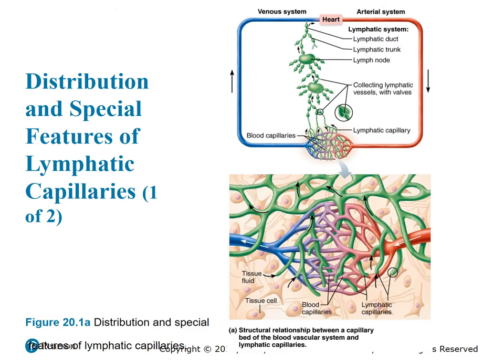Figure 20.1 shows the distribution and special features of lymphatic capillaries. In figure A, we see blood capillaries draining through their lymphatic capillaries — draining interstitial fluid that went from the blood capillaries into the lymphatic capillaries. Then there are collecting lymphatic vessels with valves, lymph nodes, lymphatic trunk, and lymphatic duct bringing it directly to the heart. From the heart there's the arterial system — the aorta, arteries, and arterioles — bringing blood into the blood capillaries. The venous return can be seen on the left, and at the bottom we can see how the blood capillaries and lymphatic capillaries are intertwined.